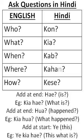Now that you know these basic words, you could try adding 'hai' at the end, which means 'is'. For example, 'Kya hai?' means 'What is?' Or 'Kaan hai?' means 'Who is?'